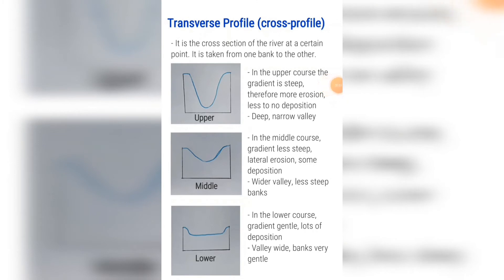In the upper course of the river the gradient is very steep, therefore more erosion takes place and no deposition takes place. The valleys are very deep and narrow.